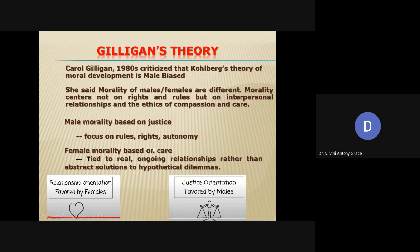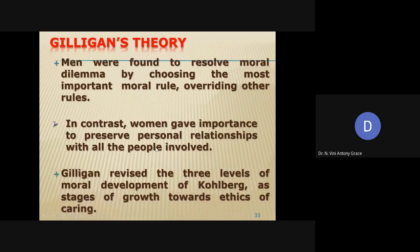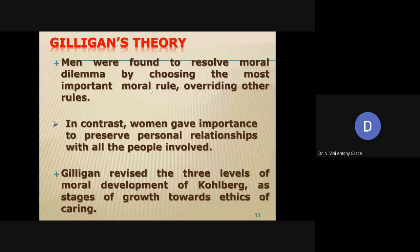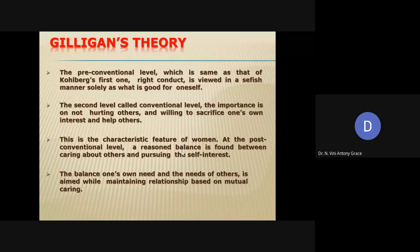This is Gilligan's critique of Kohlberg's theory of moral development. What she did is she revised the three levels of moral development of Kohlberg and developed Gilligan's theory of moral development. Men were found to resolve moral dilemmas by choosing the most important moral rule, whereas women give importance to preserving personal relationships with all people involved and will not make decisions that hurt others. She produced a revised level of moral development called Gilligan's theory.